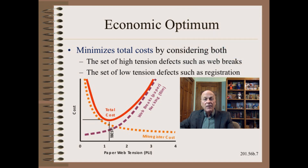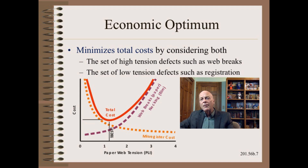At this time, we can add the set of high tension and low tension cost curves together. At the minima, we have the economic best tension. Any other tension setting will cost the company more money. Worse yet, it may be that at that economic best tension setting, we have both high tension and low tension defects still remaining. This is why we often get stuck in industry — the pleasant knobs, the knobs that the boss allows us to play with, often don't have the power to kill the problem we've been assigned to work on.